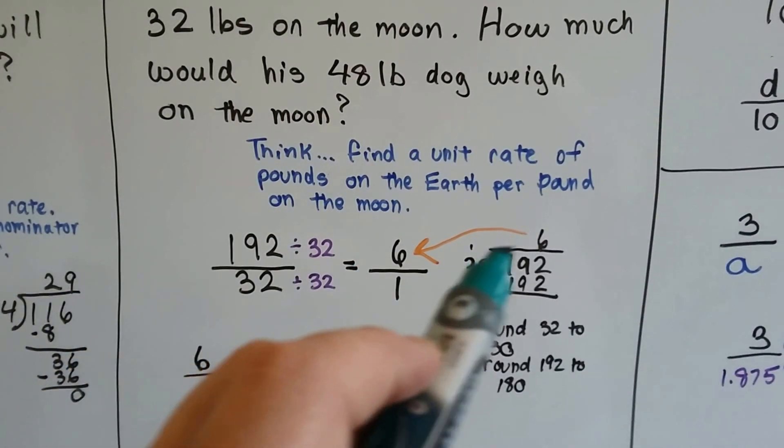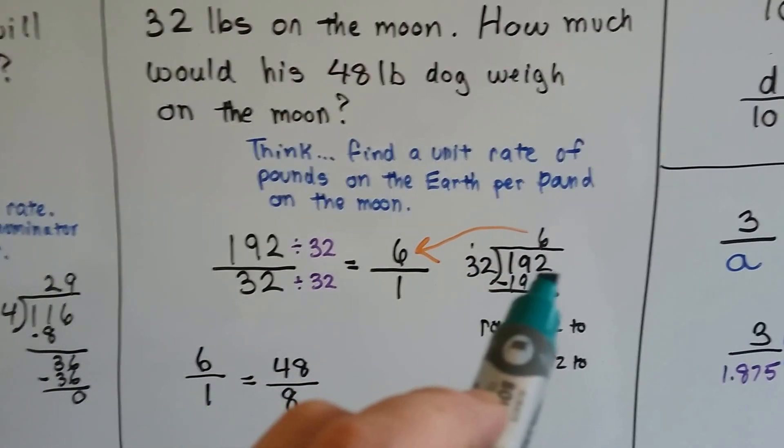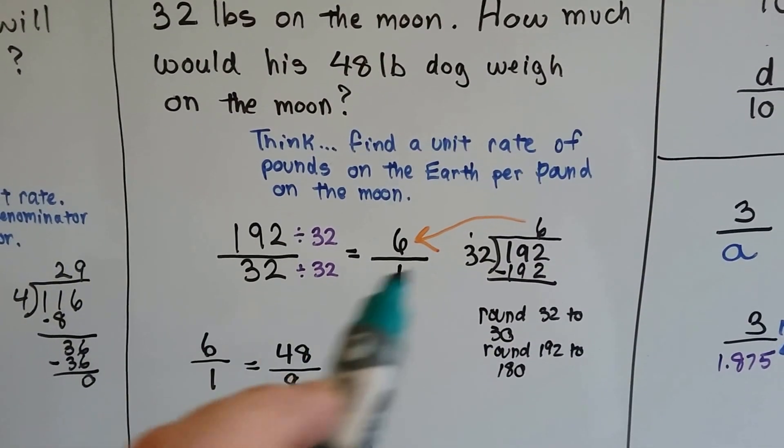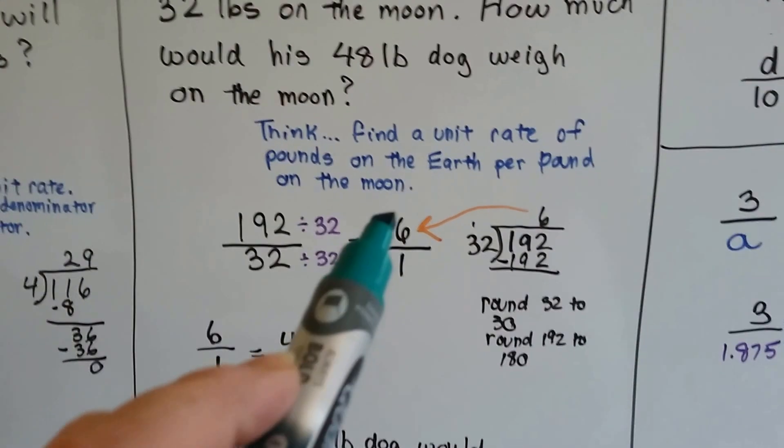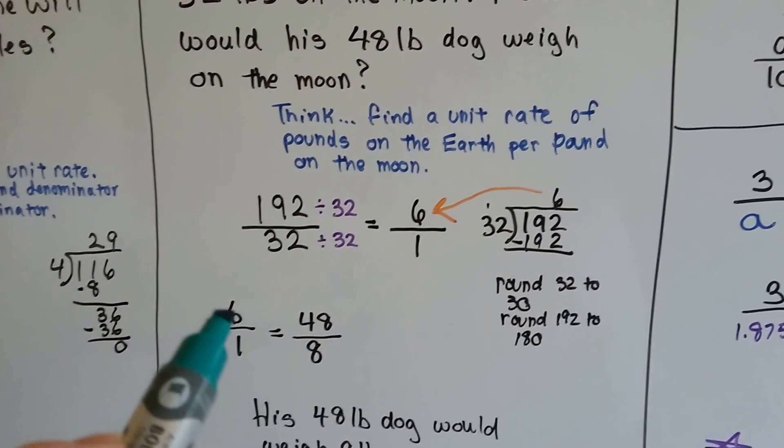192 divided by 32 turns out to be 6. We rounded the 32 to 30 and then 192 to 180, and we got a 6, and it worked out perfectly. So we know that every 6 Earth pounds is 1 Moon pound. So that's what we do for the dog.